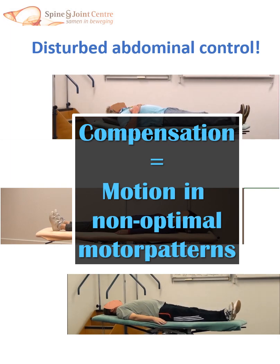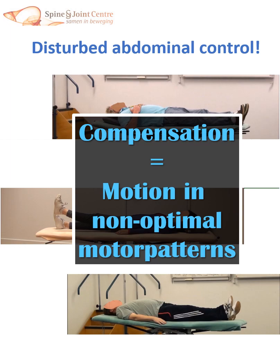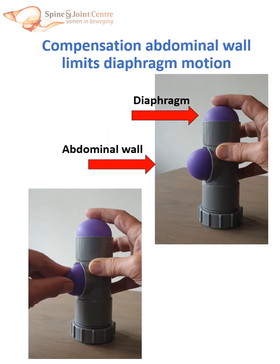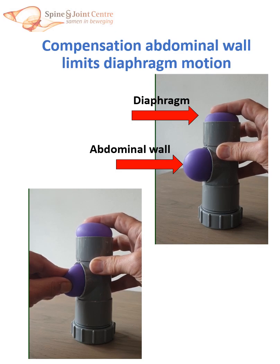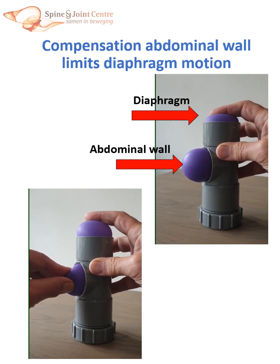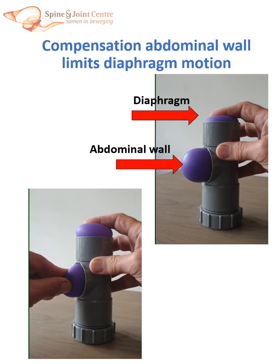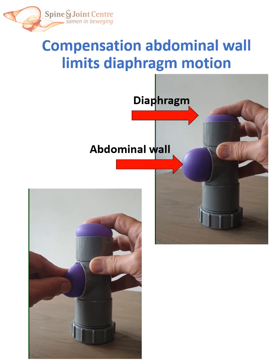What effect do these compensations have for our breathing? This plastic tube with a water-filled balloon in it provides a simple diaphragm-abdomen model. It shows that when the diaphragm lowers, the abdomen consequently expands. However, when abdominal motion is blocked, the diaphragm cannot come down — our breathing is obstructed.